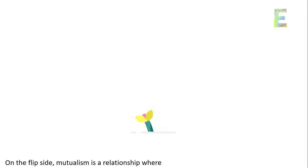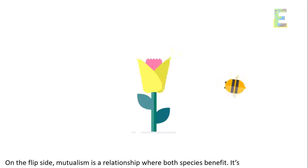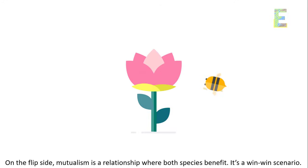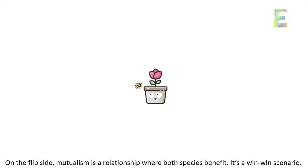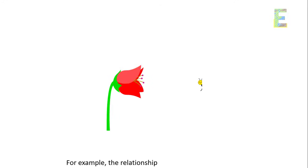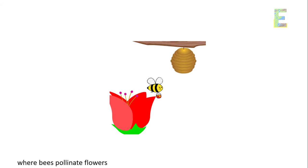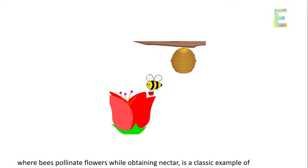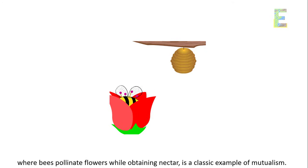Mutualism: on the flip side, mutualism is a relationship where both species benefit — it's a win-win scenario. For example, the relationship between bees and flowers, where bees pollinate flowers while obtaining nectar, is a classic example of mutualism.